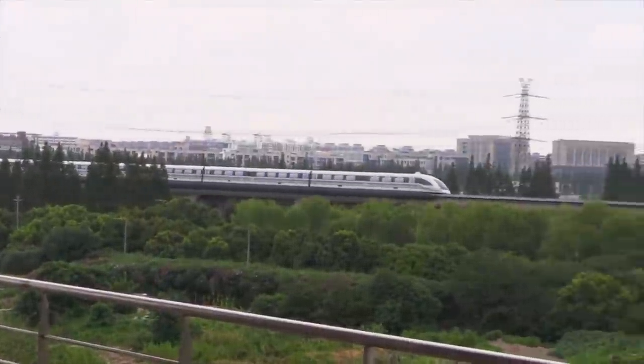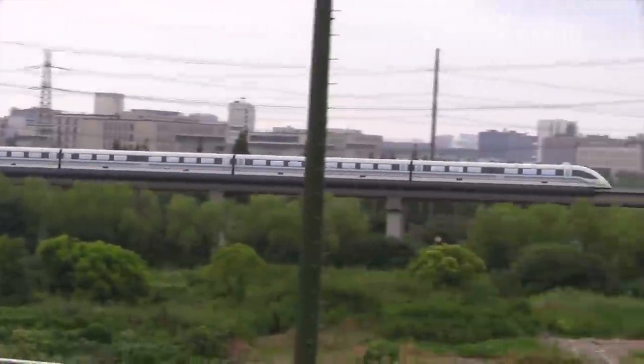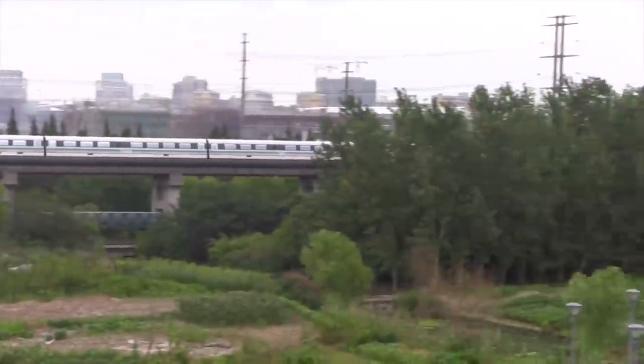China already has the world's fastest maglev train. It travels 30 kilometers from Pudong Airport to the outskirts of Shanghai. And then from there, you take the metro into the city or anywhere else you want to go.